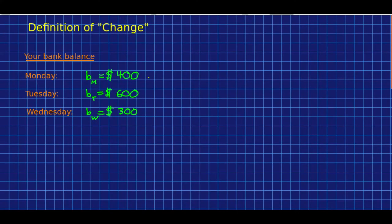Having talked about conservation laws and symmetry and things not changing, now we need to talk about when things do change and how we define a change in a quantity. So as an example, let's take a bank balance. And suppose on Monday your bank balance is $400, and on Tuesday your bank balance is $600. You would write that your change in your bank balance — since I'm using B for bank balance, I'll call this delta B. Delta means change in.